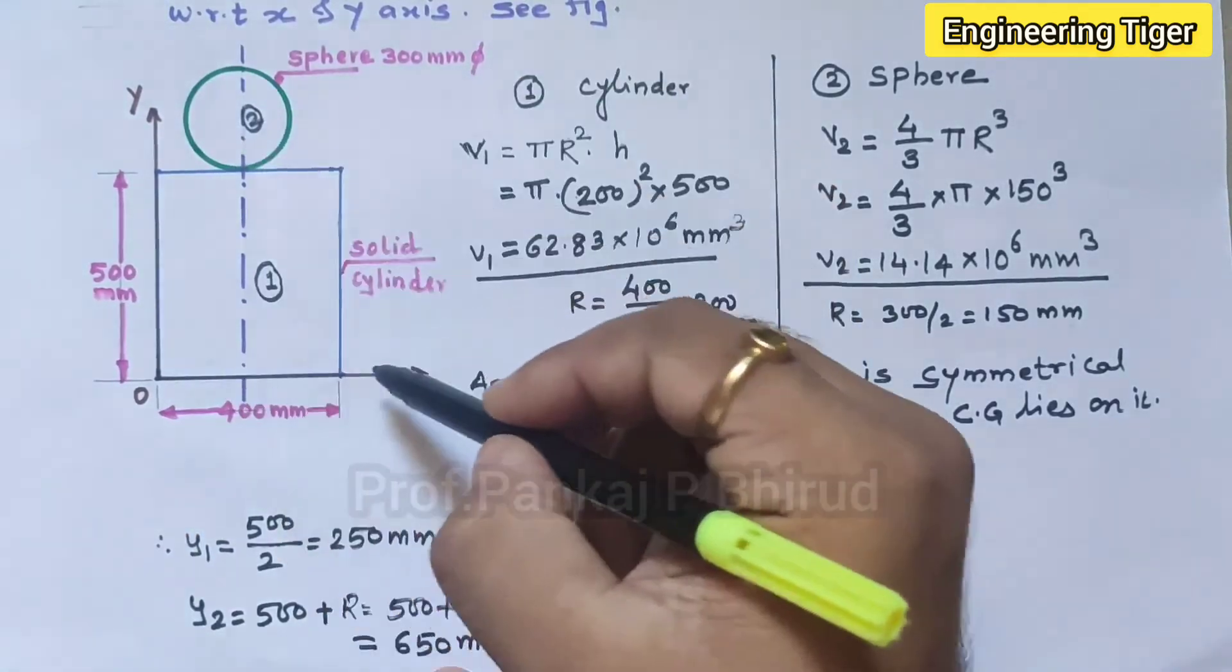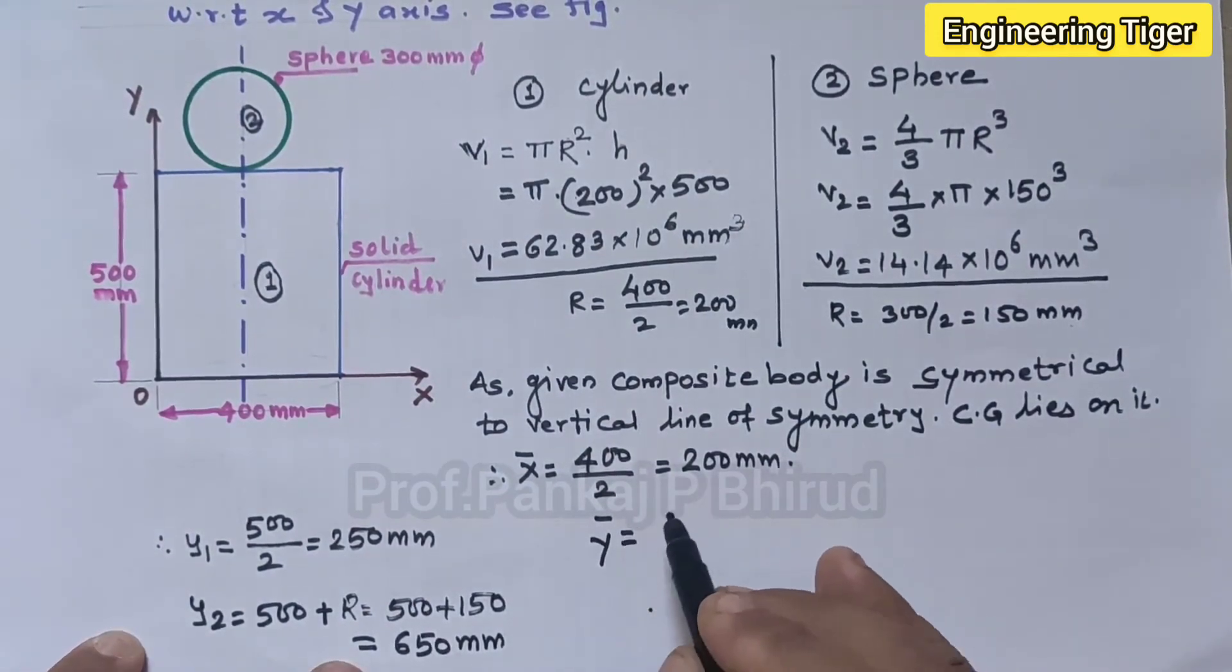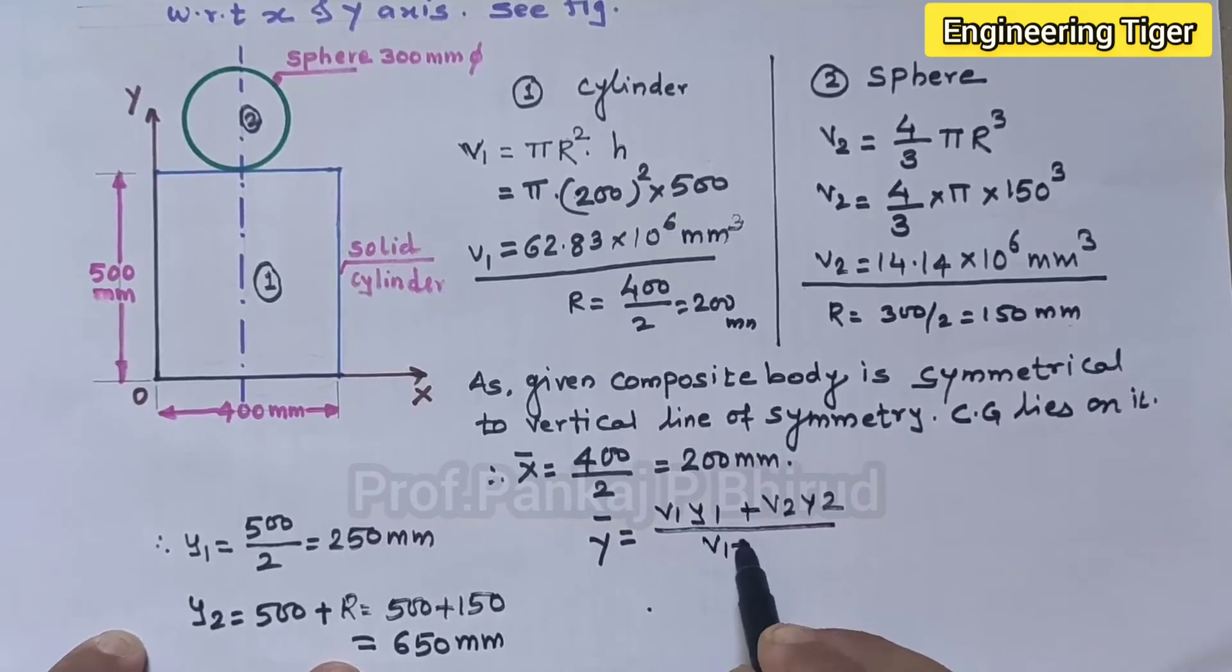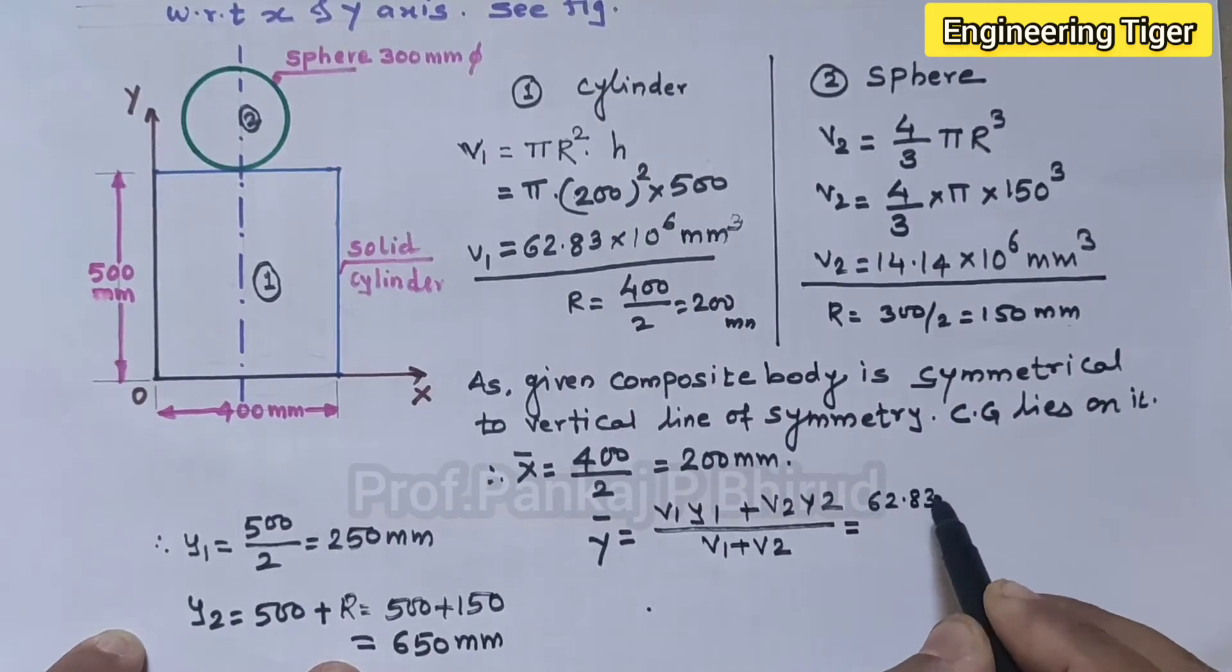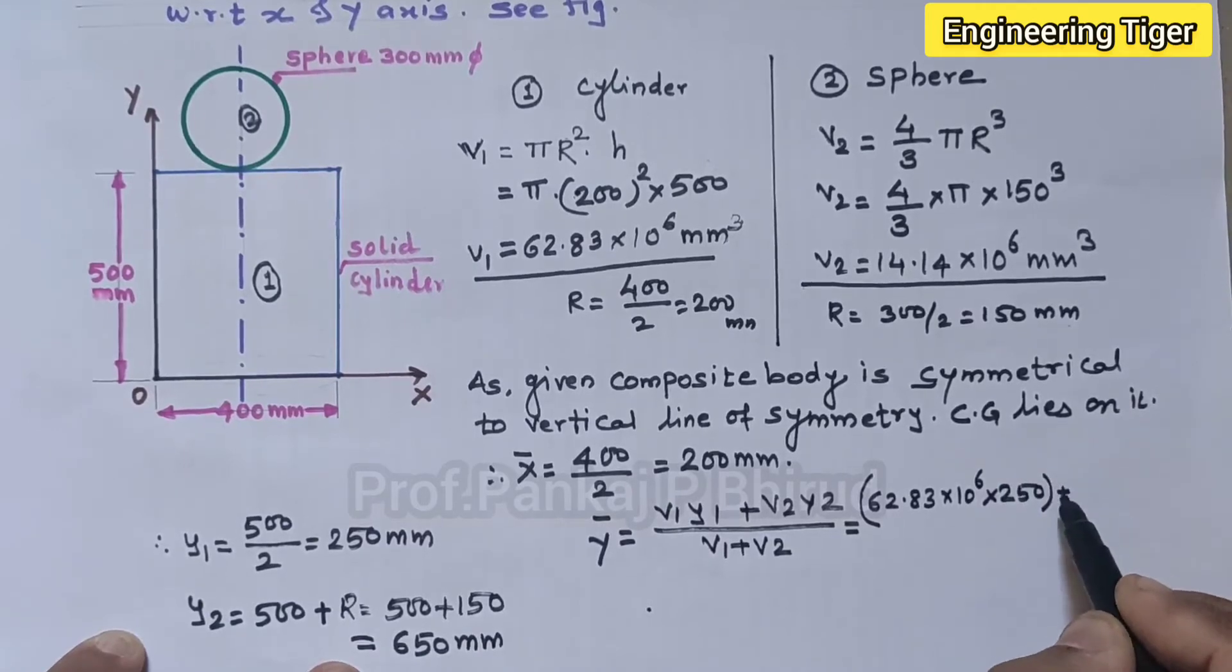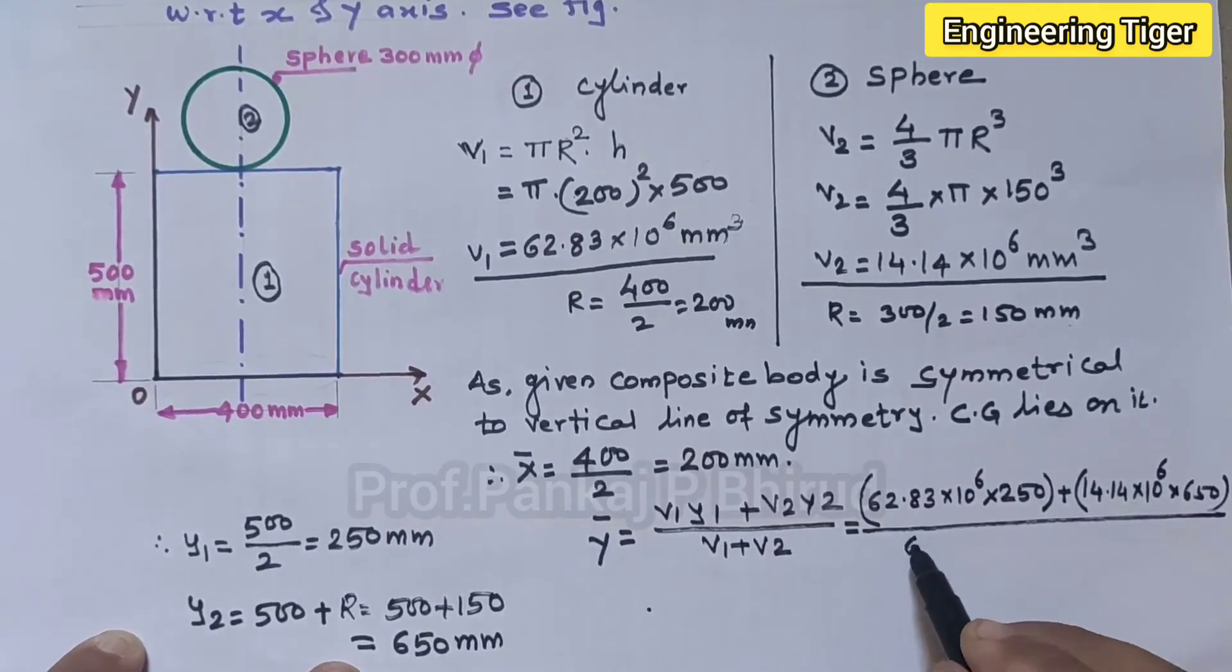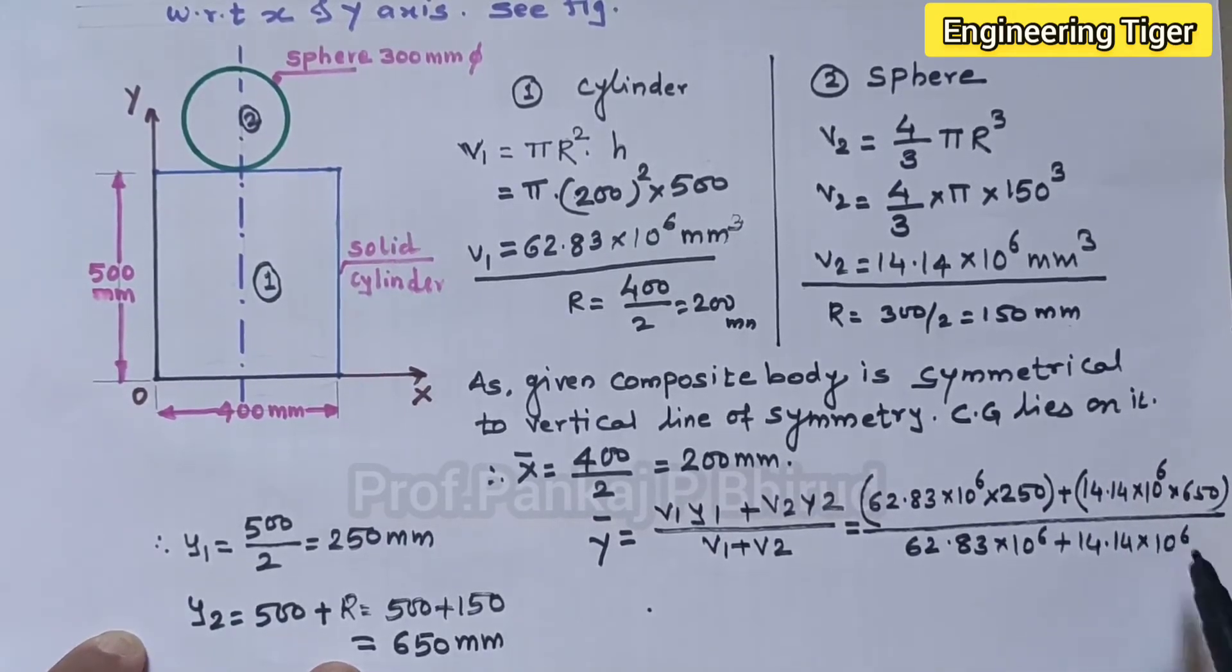Now calculate y bar. So by formula, y bar equal to V1 y1 plus V2 y2 upon V1 plus V2. So V1 is 62.83 into 10 raised to 6 into y1 is 250, plus V2 is 14.14 into 10 raised to 6 into y2 is 650, upon V1 plus V2, that is 62.83 into 10 raised to 6 plus 14.14 into 10 raised to 6. By calculating we'll get y bar equal to 323.47 mm.